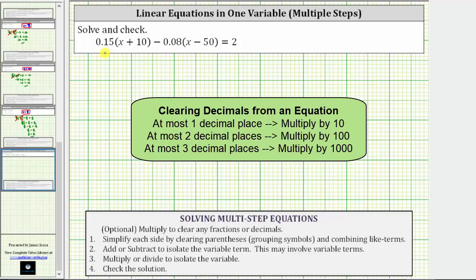we can clear the decimals from the equation by multiplying both sides by 100. We would have 100 times the left side of the equation and 100 times the right side of the equation.